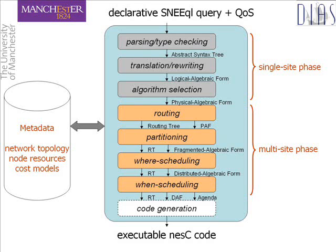We introduce the routing step, an important consideration in sensor networks as the paths by which tuples travel can have a large impact on the cost of a query plan. The timing of tasks is also important in a sensor network as radio communications require coordination between nodes and the network, so we have introduced the when-scheduling step. The steps in the multi-site phase are further described ahead. The final phase is code generation which grounds the execution on the concrete software and hardware platforms available.